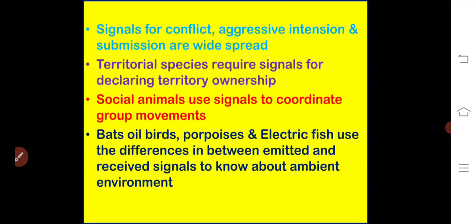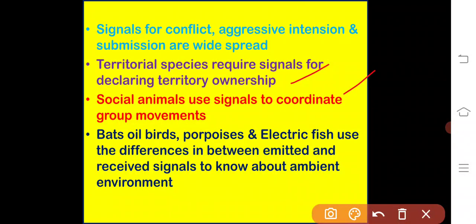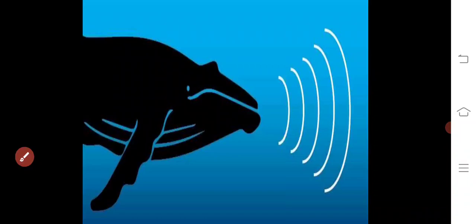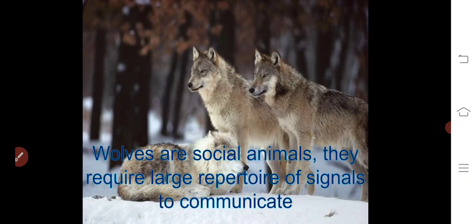Territorial species require signals for declaring territory ownership. Social animals may use signals to coordinate group movements. Usually bats, oil birds, porpoises, and electric fish use differences between emitted and received signals to know about the ambient environment. Wolves are social animals that require a large repertoire of signals to communicate among themselves.